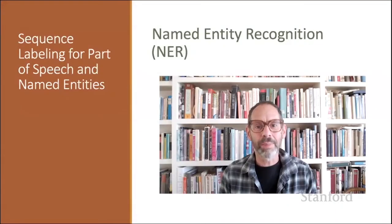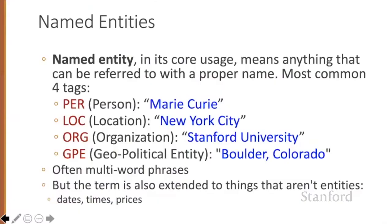Let's now introduce the task of named entity recognition. Proper names are another important and anciently studied linguistic category. While parts of speech are generally assigned to individual words or morphemes, a proper name is often an entire multi-word phrase like the name Marie Curie, the location New York City, or the organization Stanford University. Part of speech tagging can tell us that words like Marie, Stanford, or Colorado are all proper nouns — being a proper noun is a grammatical property. But viewed from a semantic perspective, these nouns refer to different kinds of entities: Marie Curie is a person, Stanford is an organization, Colorado is a location.